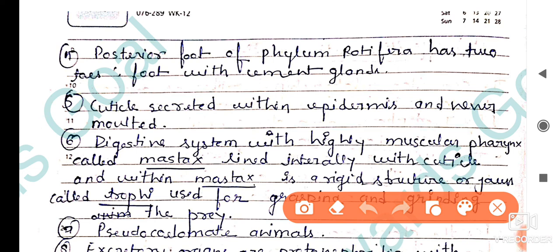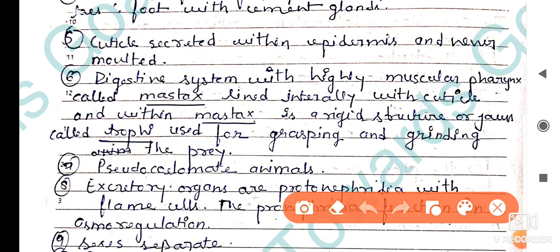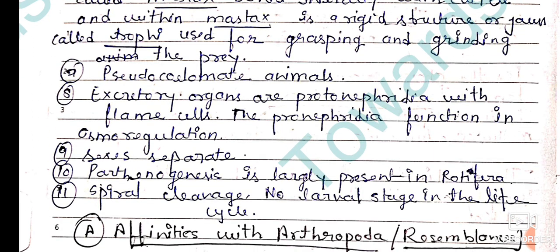The body is divided into regions. The cuticle is secreted within the epidermis and is never molted. The digestive system has a highly muscular pharynx, which is called the mastax. The mastax is lined internally with a cuticle, and within the mastax is a rigid structure or jaws called the trophi.